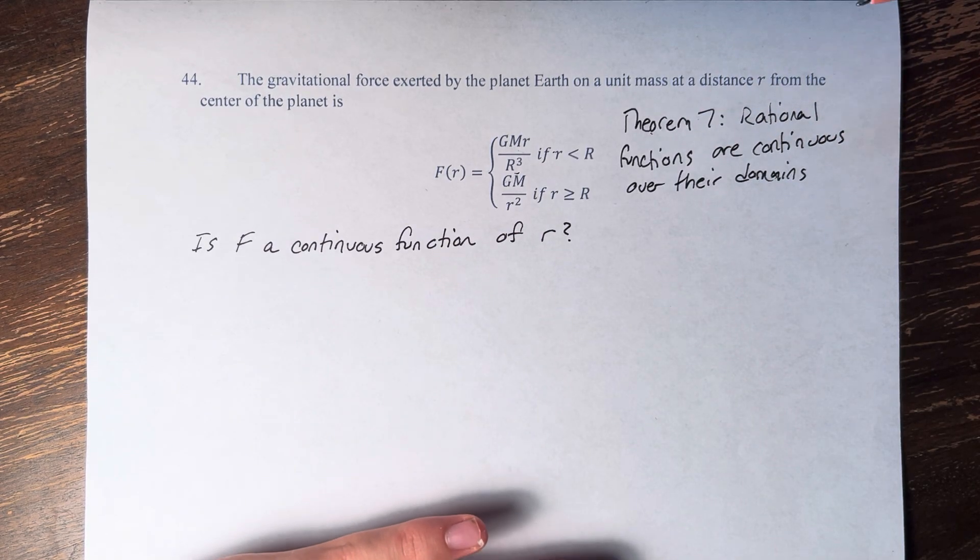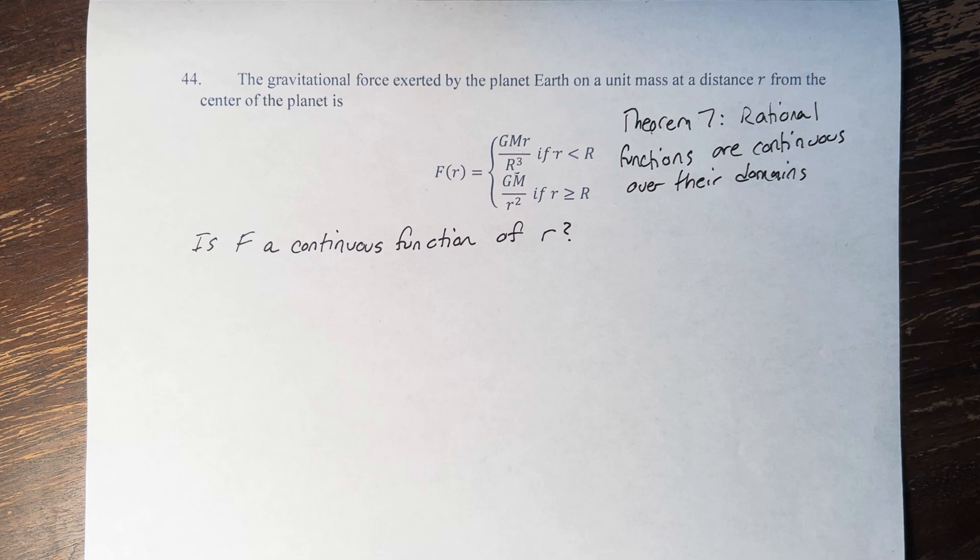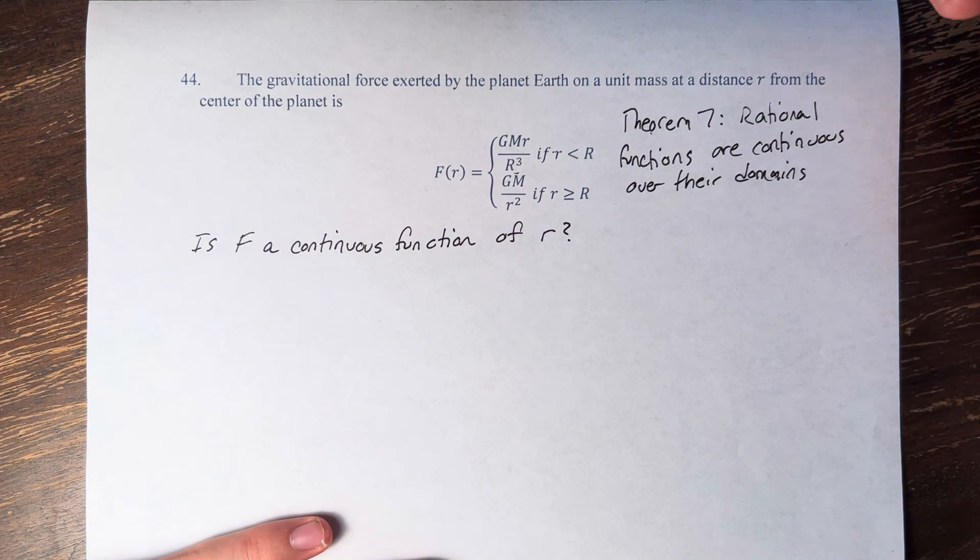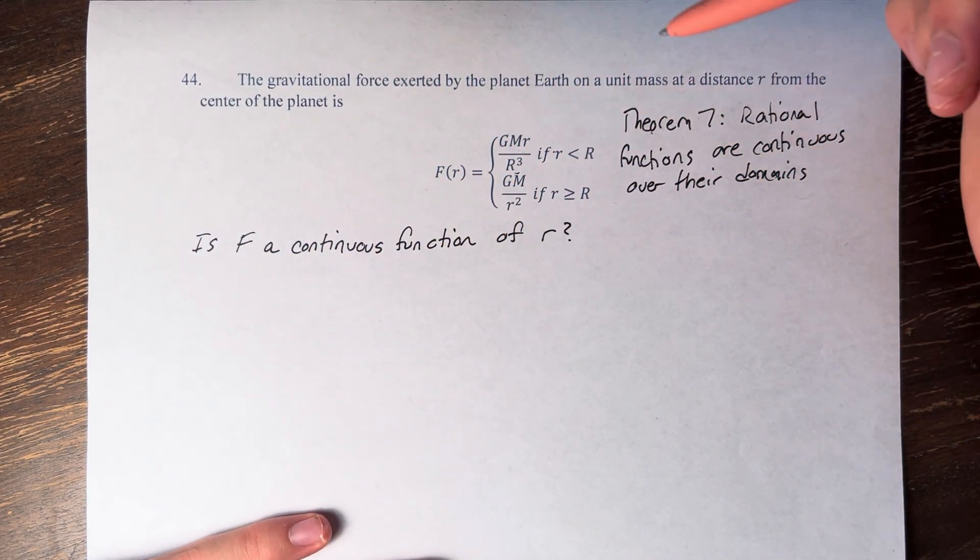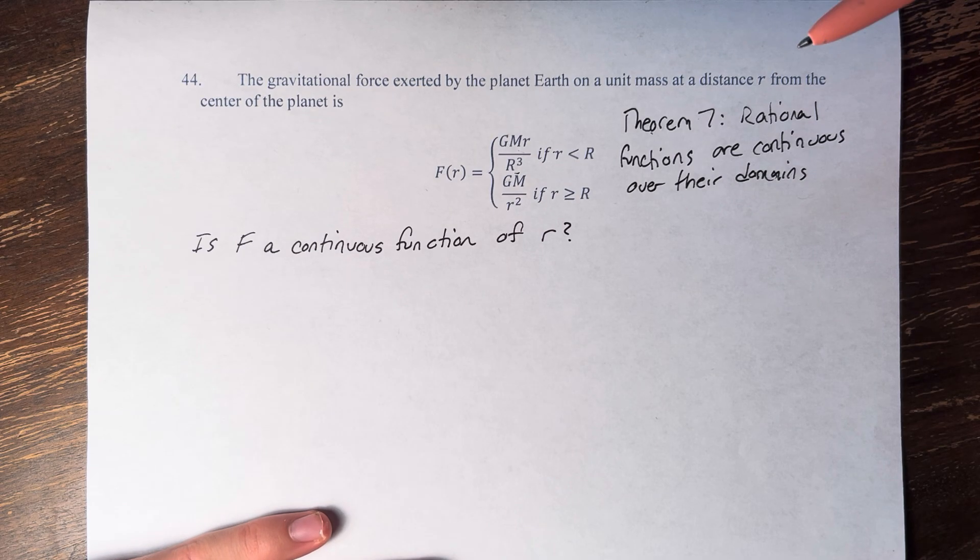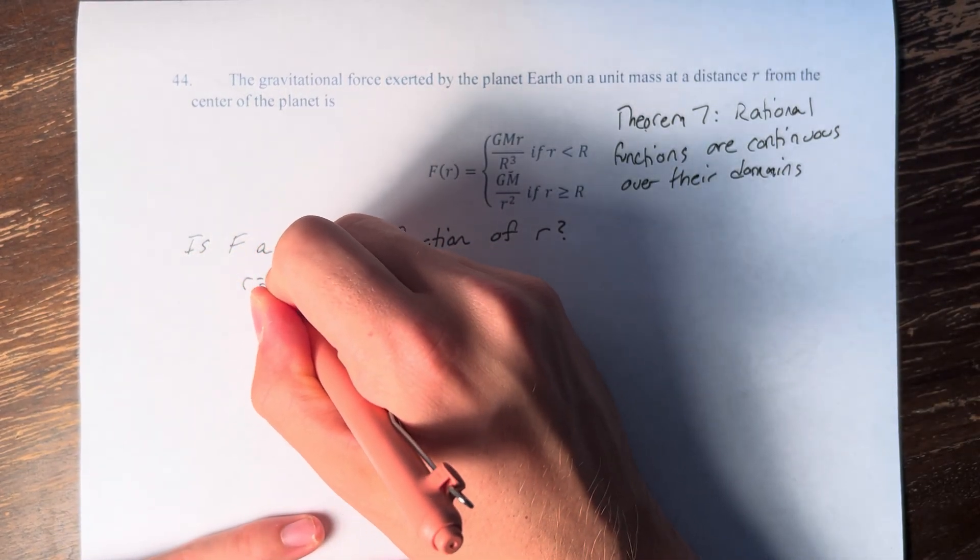And therefore, if we want to say that it is continuous for all values of r, all we have to check is the point at which r equals R.